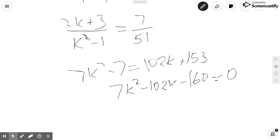So 7k squared minus 102k minus 160 equals 0. So now we need to solve this quadratic.